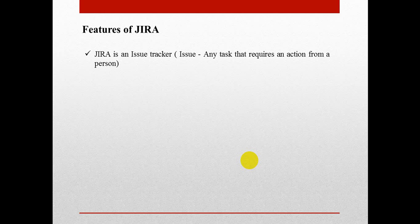An issue is nothing but work that needs to be done by a person — that can be a developer, a tester, or any other team member. For example, if you are testing your application and you find a defect, you will report that defect to your developer. In Jira terminology, we say that you reported one issue to the developer, meaning the developer has to work on that issue.